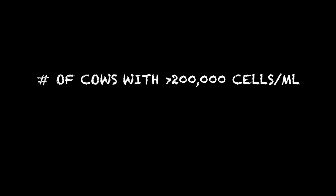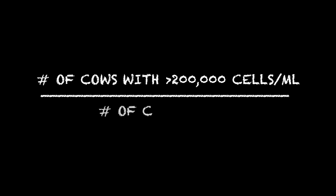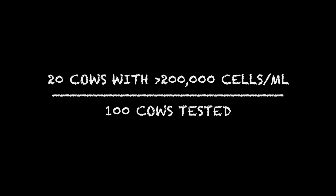The formula for estimating the prevalence of subclinical mastitis is very simple. You take the number of cows that exceed the threshold — such as 200,000 cells per ml — and divide that by the number of cows that have valid somatic cell count tests. For example, if you have 100 cows tested and 20 are above 200,000, your prevalence is 20%.